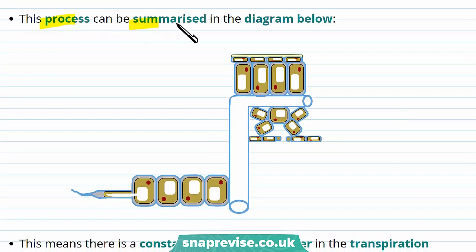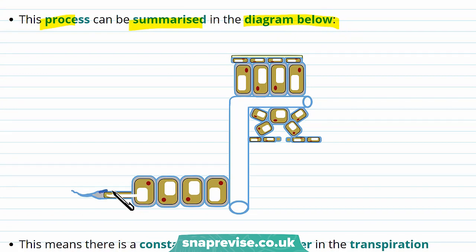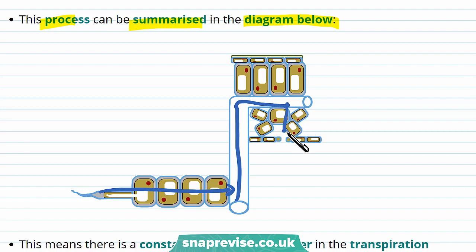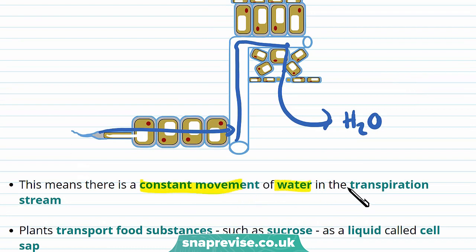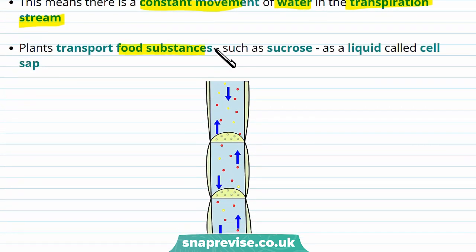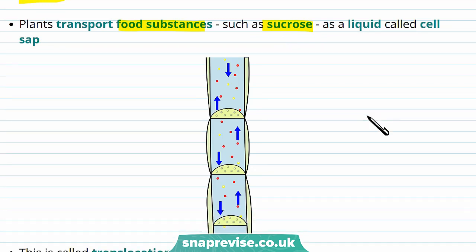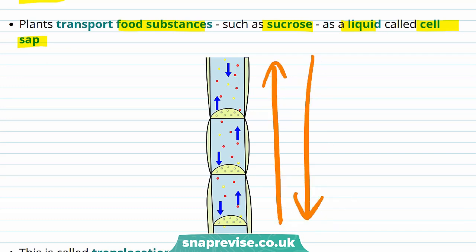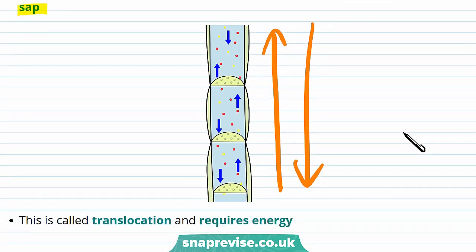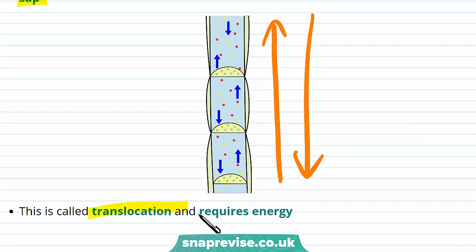This process can be summarised in the diagram below. Water moves from cell to cell, reaches the xylem and travels up it, then eventually goes into the leaf where it evaporates and diffuses out as water vapour. This means there is a constant movement of water in the transpiration stream. However, plants also need to transport food substances such as sucrose, which is transported as a liquid called cell sap. Unlike transpiration, this flow can go towards or away from the leaf. This process is called translocation and it requires energy.